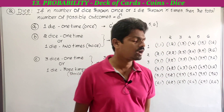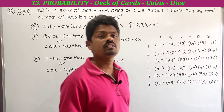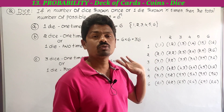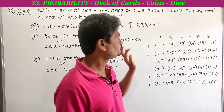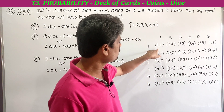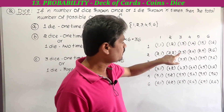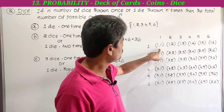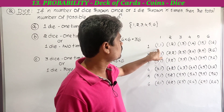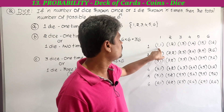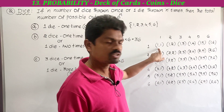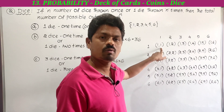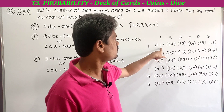The outcomes go from (1,1) all the way up to (6,6), giving us a total of 36 possible outcomes when two dice are thrown.